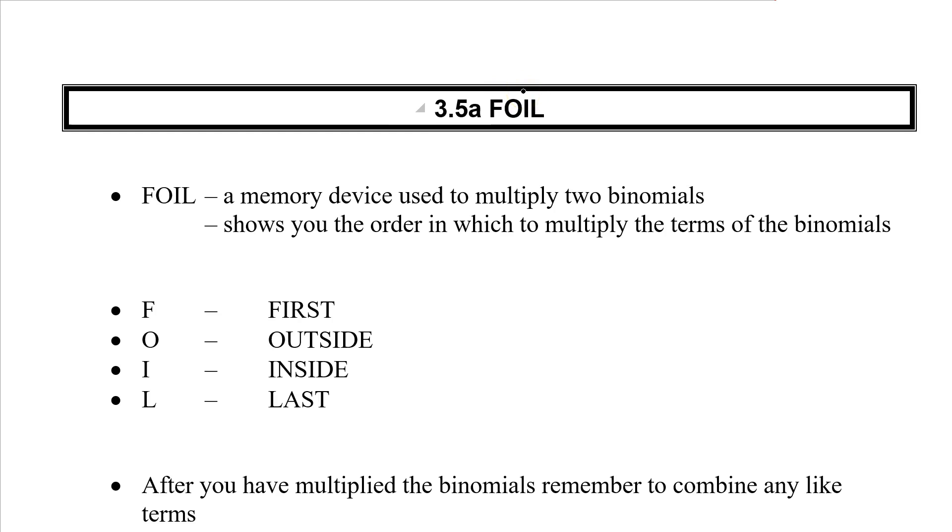So it's F-O-I-L. Each of those letters stand for something, and we're multiplying two binomials. This method really only works for binomials, not for trinomials or monomials. But if we are asked to multiply two binomials, FOIL works great. The F stands for first, the O stands for outside, the I stands for inside, and the L stands for last. If you can remember first, outside, inside, last, it's a way to remember how you multiply the parts of each binomial.